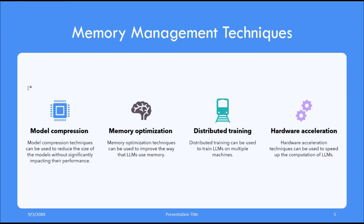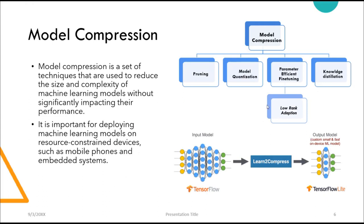Another technique is distributed training, which can be used to train LLMs on multiple machines, helping to reduce the memory requirement for each individual machine. We also have hardware acceleration, which can speed up the computation of LLMs and reduce the amount of memory needed to store model weights and activations. Let's focus on model compression, because it is the technique used by everyone working with LLMs and is the most convenient form, with a lot of research behind it.